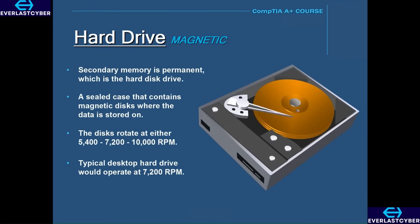The higher-end hard drives would operate at the 10,000 RPM range, but these higher-end hard drives are not commonly used anymore because of the advanced speeds of solid-state drives. Additionally, hard drives are considered non-volatile because they can retain and store data when not connected to a power source.